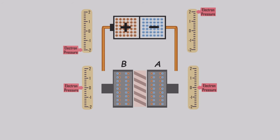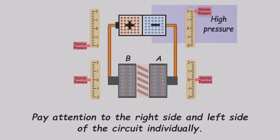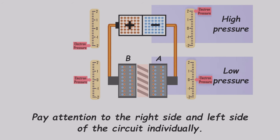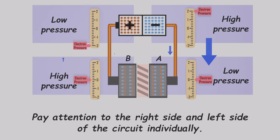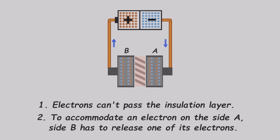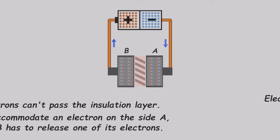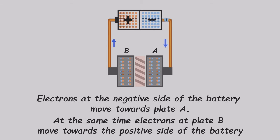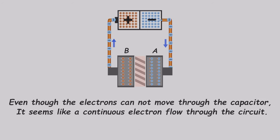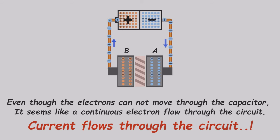Let's connect the capacitor to a battery. Focus on the right side of the circuit. Electrons from the negative side see that the capacitor's plate A has less electron pressure compared to the negative side of the battery. Thus, they try to move towards plate A. Similarly, on the left side, electrons in plate B of the capacitor move towards the positive side of the battery, attracted by the lower electron pressure. Remember, the electrons can't cross the insulating layer, so as one plate gains an electron, the other releases one. This creates the effect of a continuous electron flow, resembling a current through the circuit.